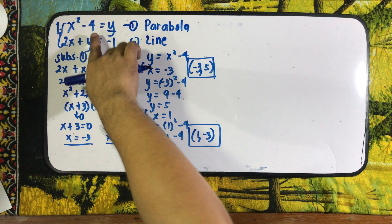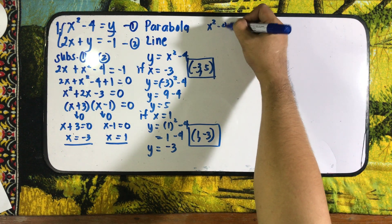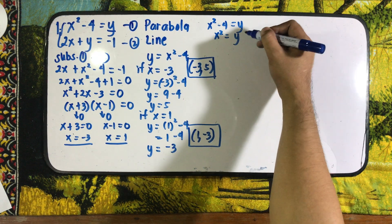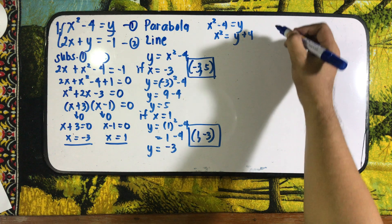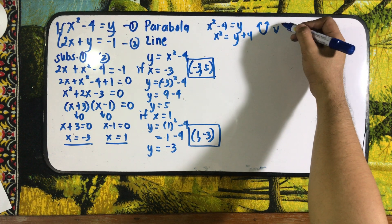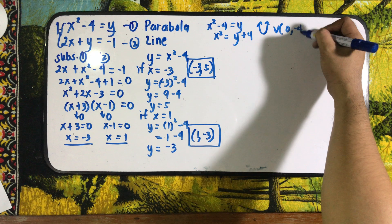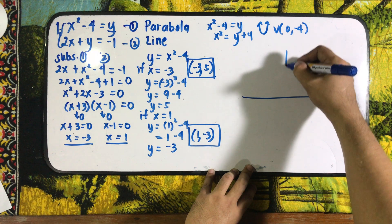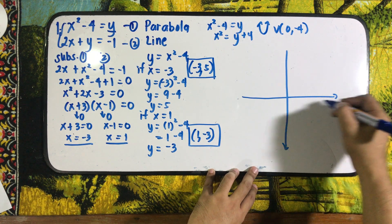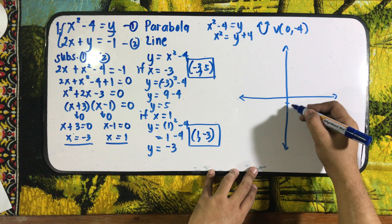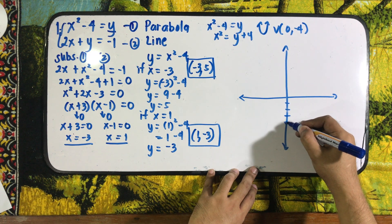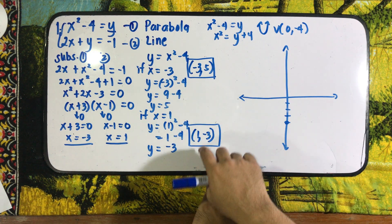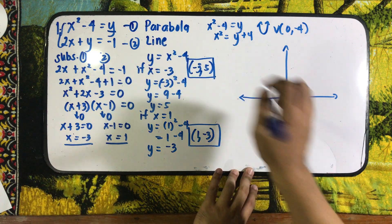Let us analyze the graph. We are given x squared minus 4 equals y, which can be rewritten as x squared equals y plus 4. This is a parabola opening upward with vertex located at (0, negative 4). We can plot the intersection points of the parabola and the line: the first intersection is at (negative 3, 5) and the second is at (1, negative 3).